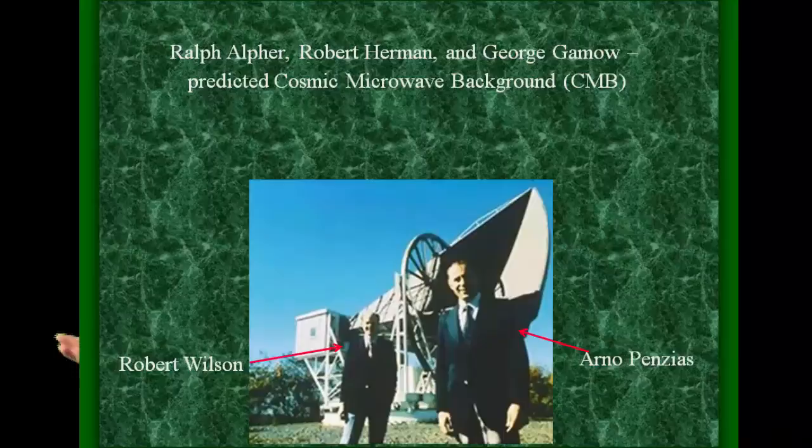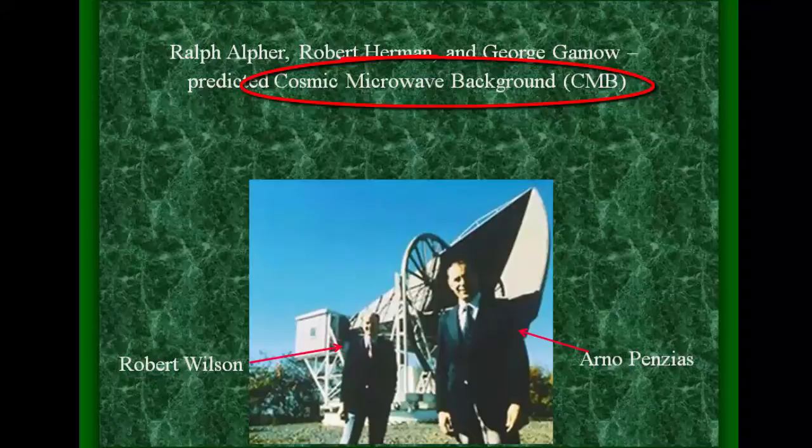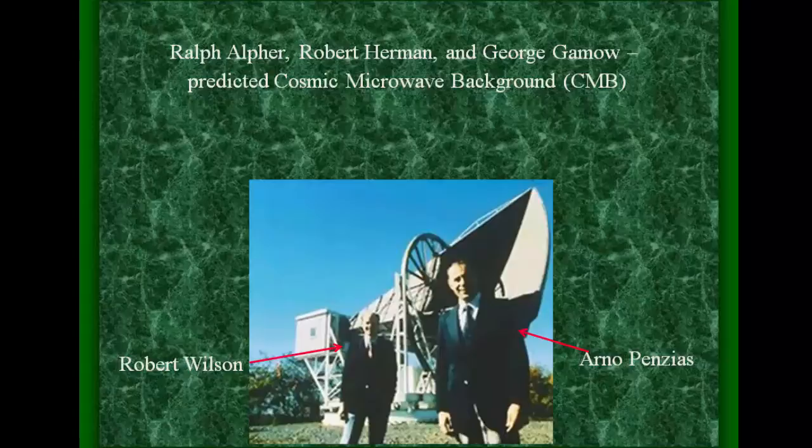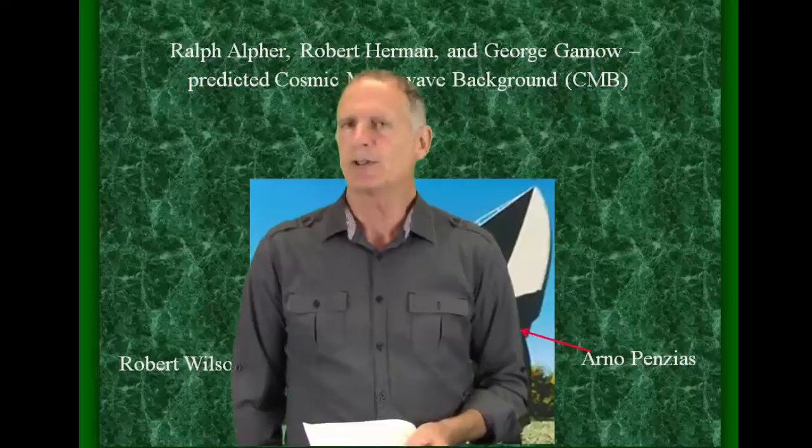And they called that, they didn't call it that, but we now call it the cosmic microwave background radiation, as you can see there. And the cosmic microwave background was estimated by the three of them to be about five degrees Kelvin.